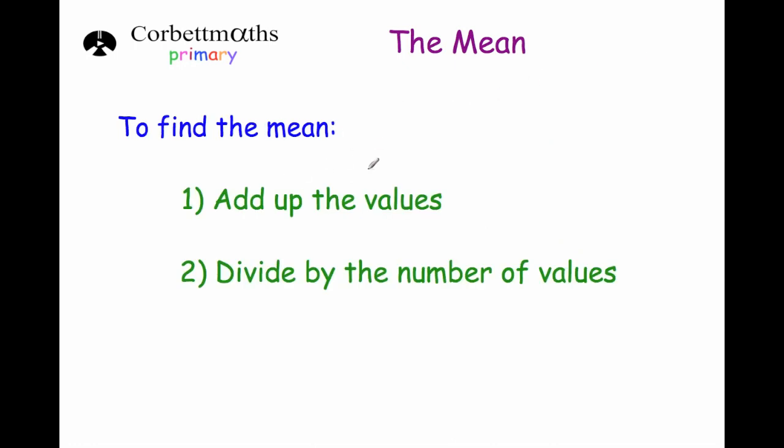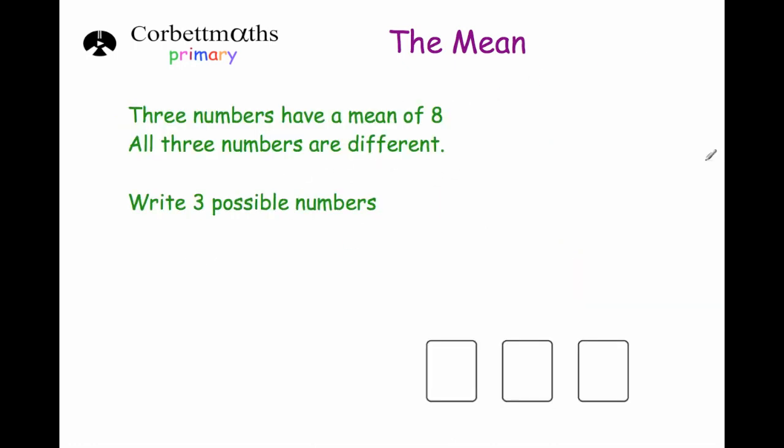To work out the mean, you add up the values and divide by the number of values. Let's have a look at a question which is a bit different. This question says three numbers have a mean of 8. All three numbers are different. Write down three possible numbers.